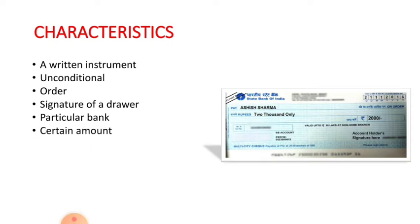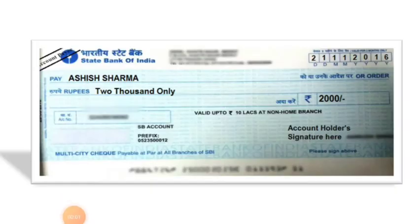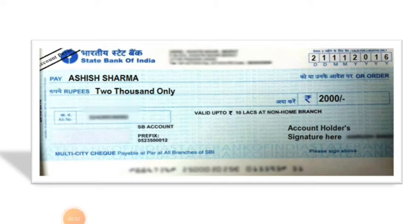Next is certain amount. The drawer should direct the banker to pay a fixed amount which must tally both in words and figures. For example, in words it should be written as 2000 only. No 'about' or 'so' word should be written, and in numbers 2000/- so that nobody will add an amount after it.